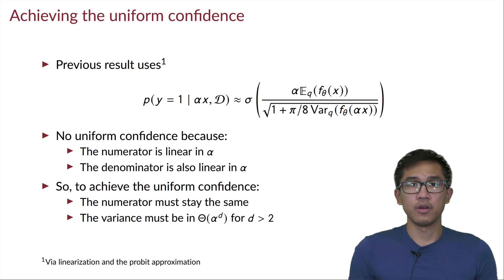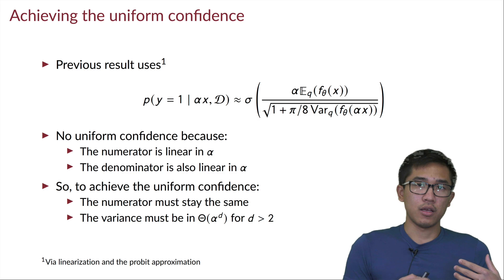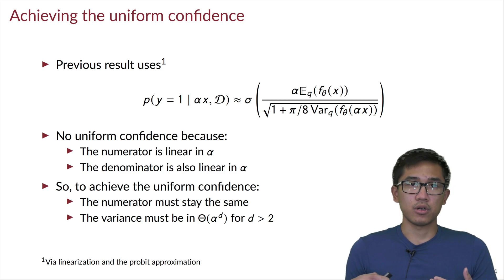And so based on this insight, we know that a sufficient condition for us to have the uniform confidence is that the denominator has to grow faster than the numerator. In particular, if we fix the numerator and we make the denominator grow faster than linear, meaning that we need to have a super-quadratic variance in this case.